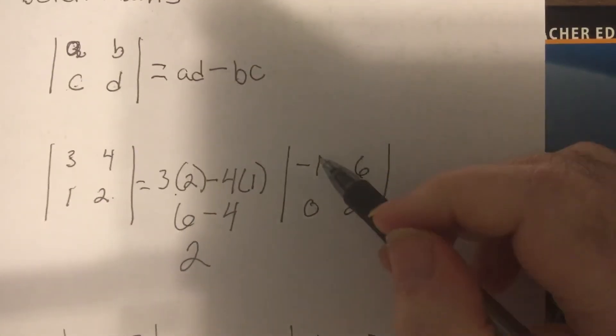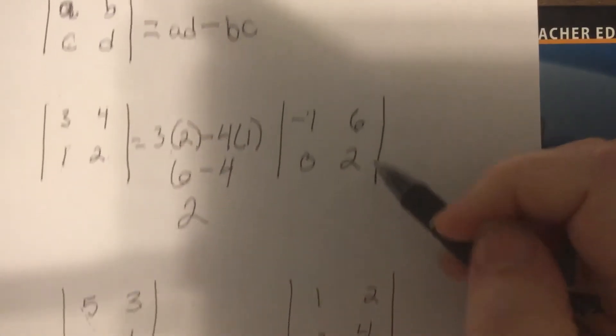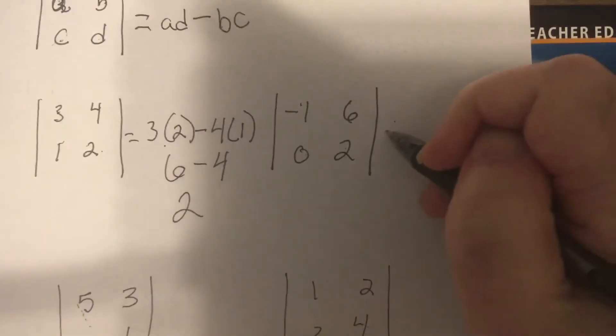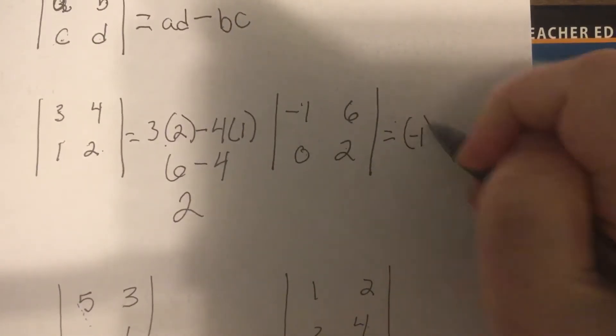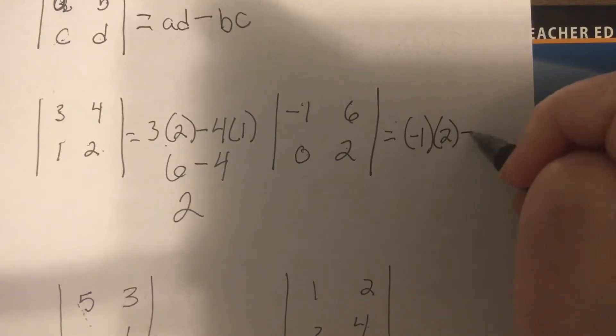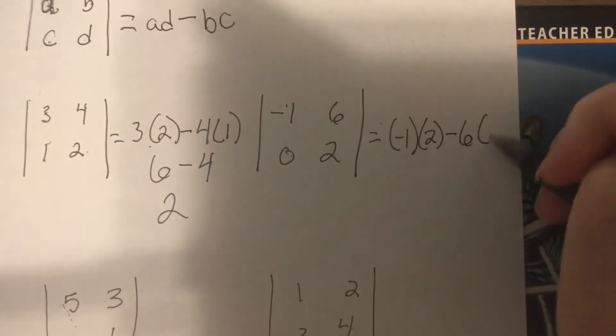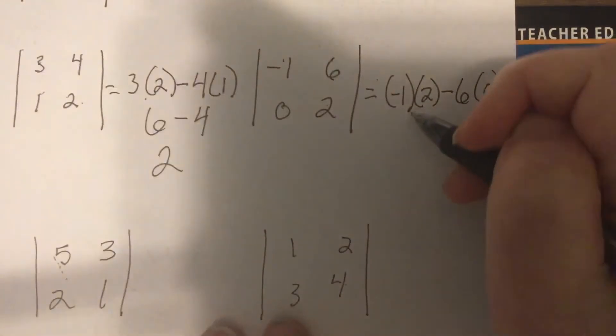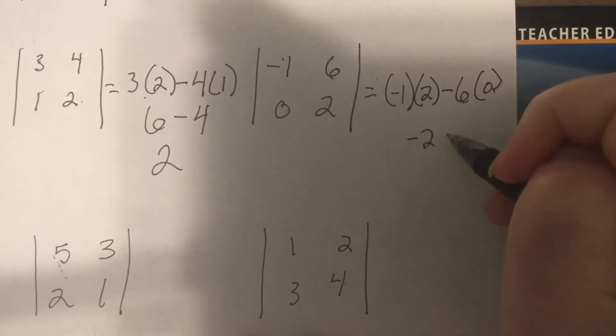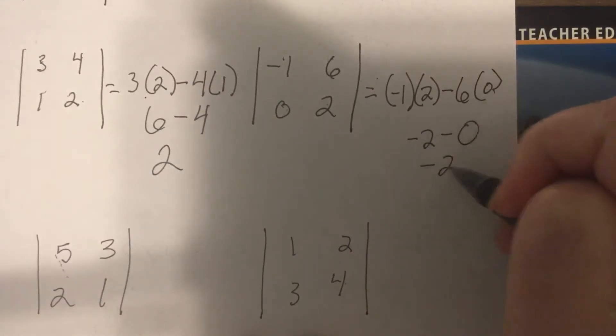So the determinant of this would be negative 1 times 2 minus 6 times 0. So it'd be negative 2 minus 0 is negative 2.